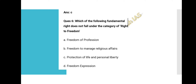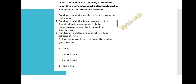Question 6: Which of the following does not fall under the category of the Right to Freedom? Option A: Freedom of profession. Option B: Freedom to manage religious affairs. Option C: Protection of life and personal liberty. Option D: Freedom of expression. Option B is correct — freedom to manage religious affairs does not fall under the Right to Freedom.